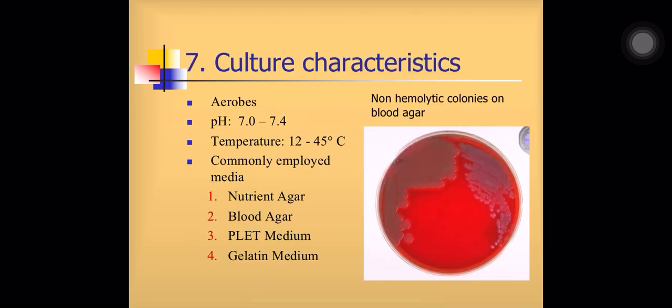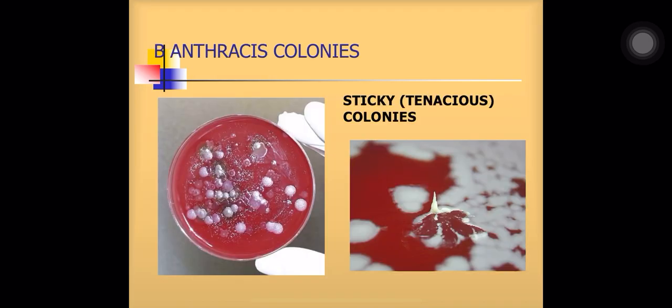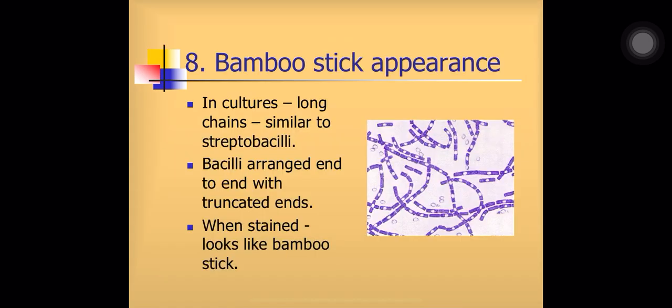Culture characteristics of Bacillus anthracis: they are aerobic, pH requirement 7 to 7.4, temperature range 12 to 45 degrees Celsius. Commonly used media include nutrient agar, blood agar, PLET medium, and gelatin medium. The colonies of Bacillus anthracis are very sticky, known as tenacious or sticky colonies. The microscopic picture shows a chain of gram-positive bacilli that looks like bamboo sticks — this is known as bamboo stick appearance.